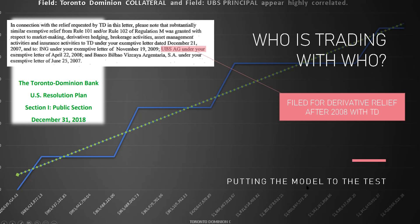If it's correlated, we research to see if there's any indication that that's true. In connection with the relief requested by TD — Toronto Dominion Bank — please note the substantially similar exemptive relief from Rule 101 and/or Rule 102 of Regulation M, which revolves around derivatives hedging, asset management activities, and insurance activities. Basically, UBS AG sent an exemptive letter for derivatives on November 19th to 29th of 2009, so there is some correlation there.